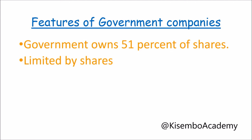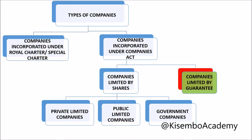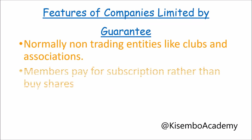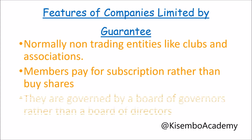Companies limited by guarantee are usually non-trading businesses like clubs, associations, and non-governmental organizations. Members pay subscription fees rather than purchasing shares, and they are governed by a board of governors rather than a board of directors. In case of liquidation, members guarantee to contribute up to a certain amount if assets don't sufficiently cover the company's debts. Examples include clubs, traders' associations, NGOs like Save the Children's Fund, and football clubs.